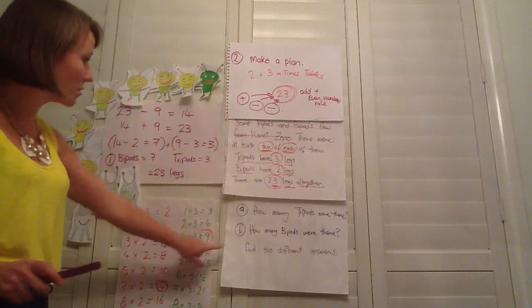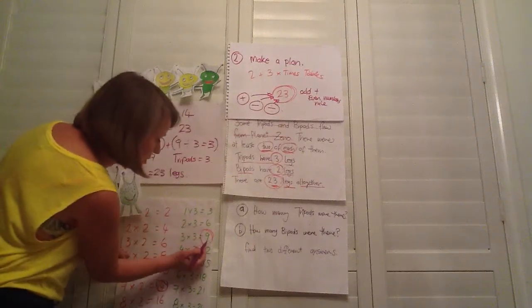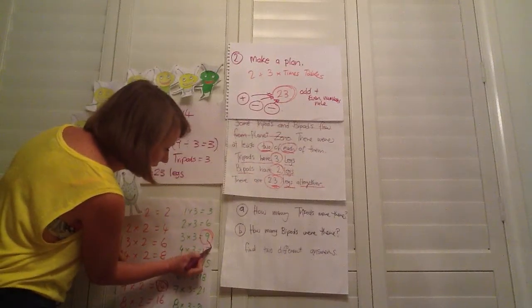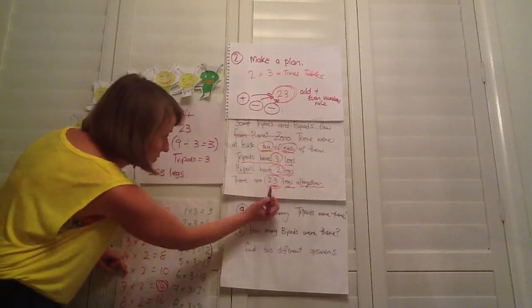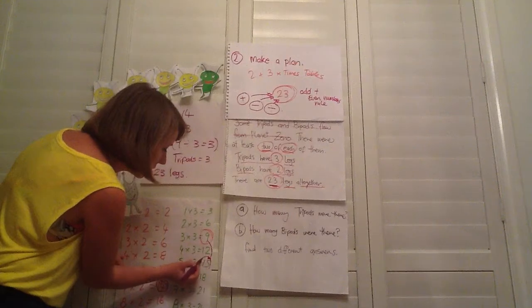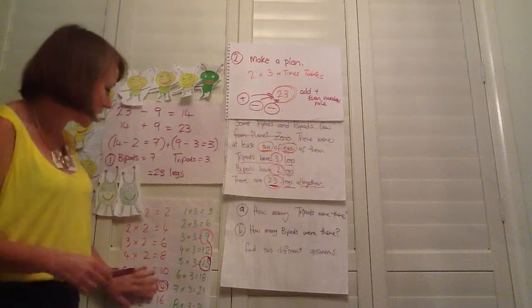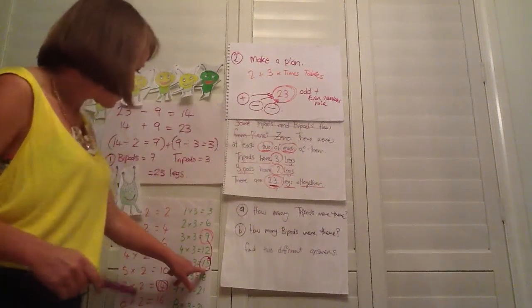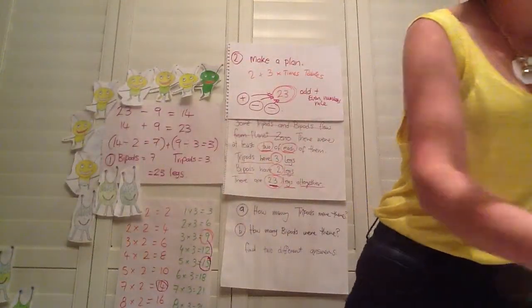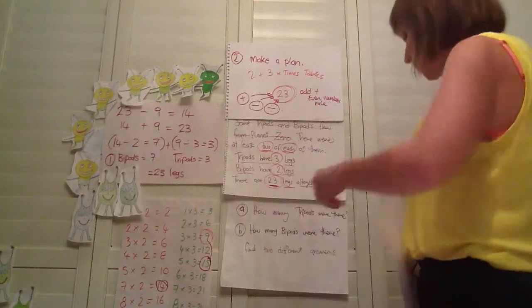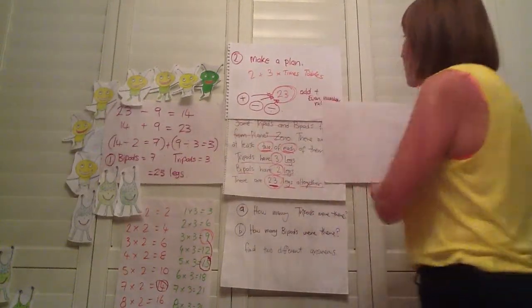So back onto our three times table. So we're going to find another answer. Answer number two. So I think we need to go to our next, we need to skip to our next odd number. So because number 23 is an odd number. So we'll go 15 and because twos are even numbers, we can just easily add a two times table number from there. So let's start with 15. Okay. And I'll just put some paper up here. So we'll just go here.